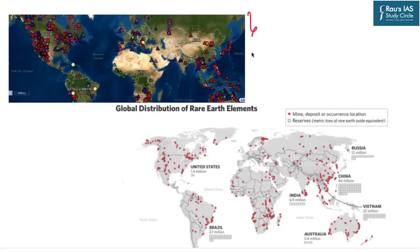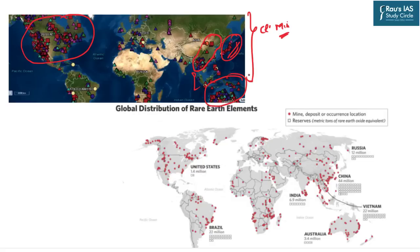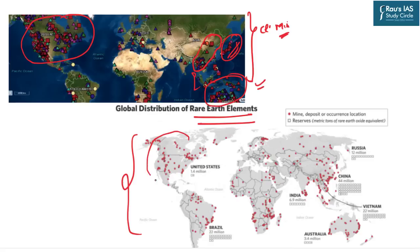Looking at the distribution maps: critical minerals are predominantly found in the US and Canada, then Australia, Southeast Asia, some parts of China, and Japan. The distribution of rare earth minerals shows huge overlap with these regions — large amounts in the United States and Canada, Australia, parts of China and Southeast Asia, and also some parts of Africa. Critical minerals are also present in Africa, and there are certain rare earth minerals present in India as well.